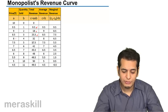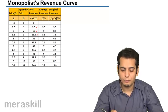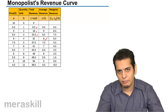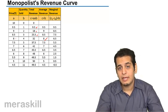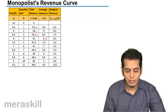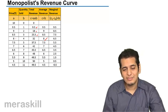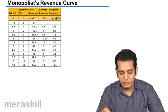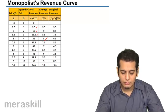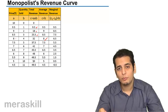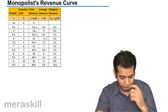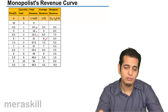When selling 4 units with a total revenue of 32 rupees, 32 divided by 4 gives an average revenue of 8. In this manner you can find the average revenue for all cases. In the last case, the product is sold for 4.5 rupees and 11 units are sold, giving a total revenue of 49.5. The average revenue is 49.5 divided by 11, which equals 4.5.